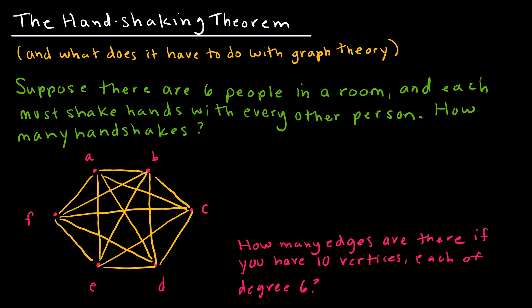So that brings us to the handshaking theorem, and the handshaking theorem started really with a question like the one I've written in green. Suppose there are six people in a room, and each must shake hands with every other person. How many handshakes happen? You can see I've already drawn the graph out for you really just to save time, but let's take a look just the long way counting this.